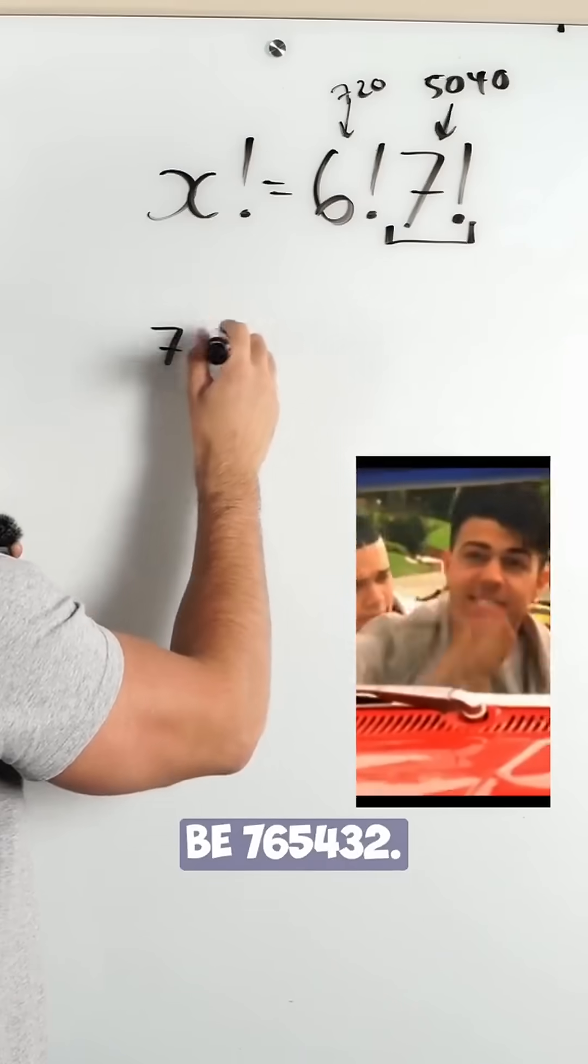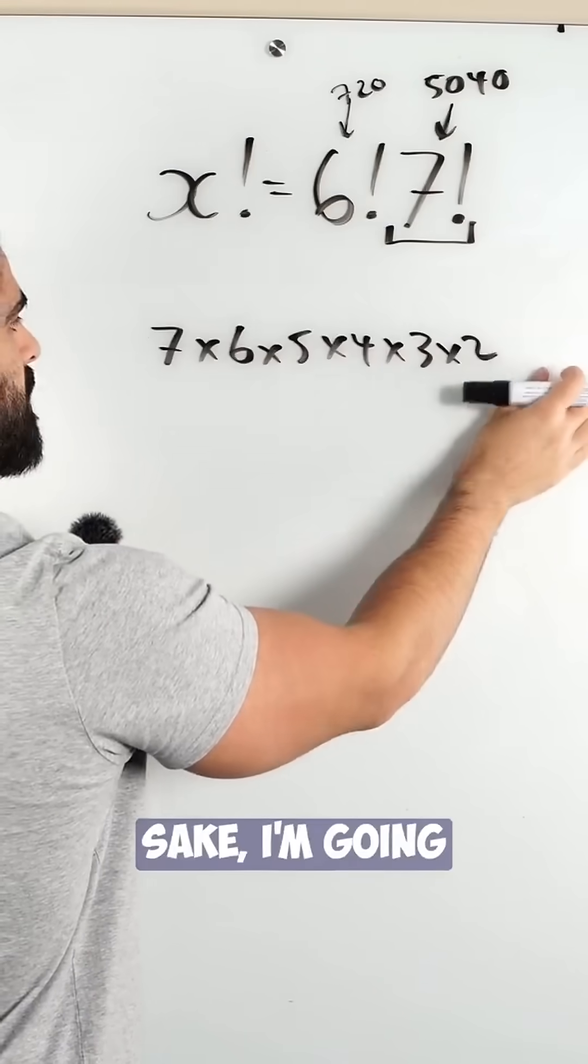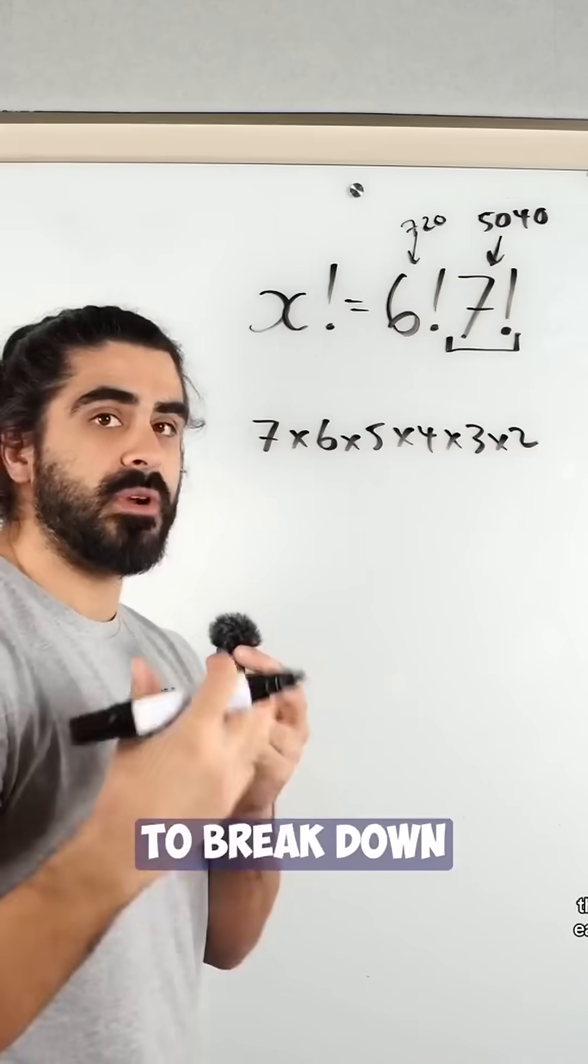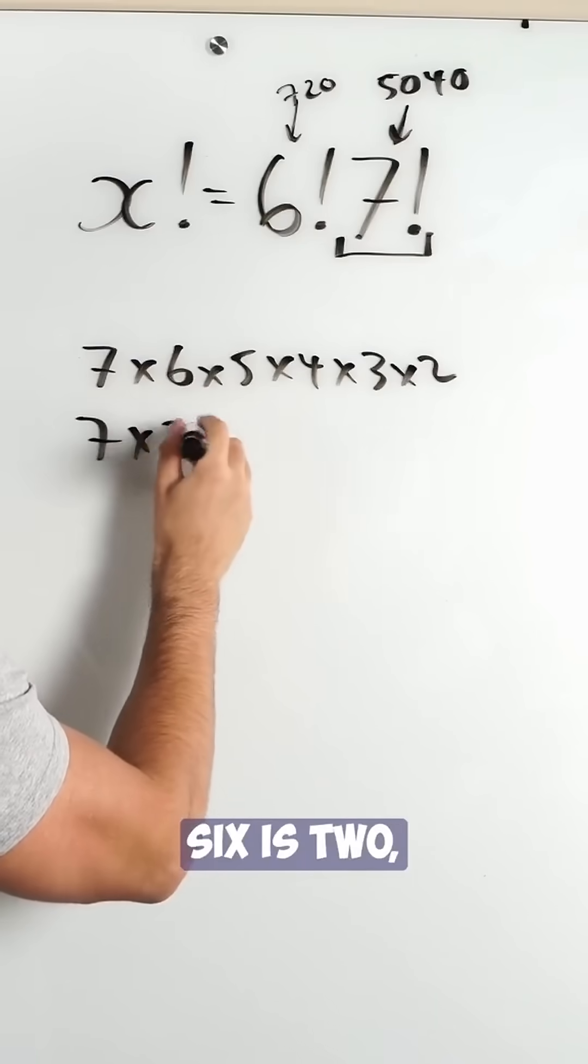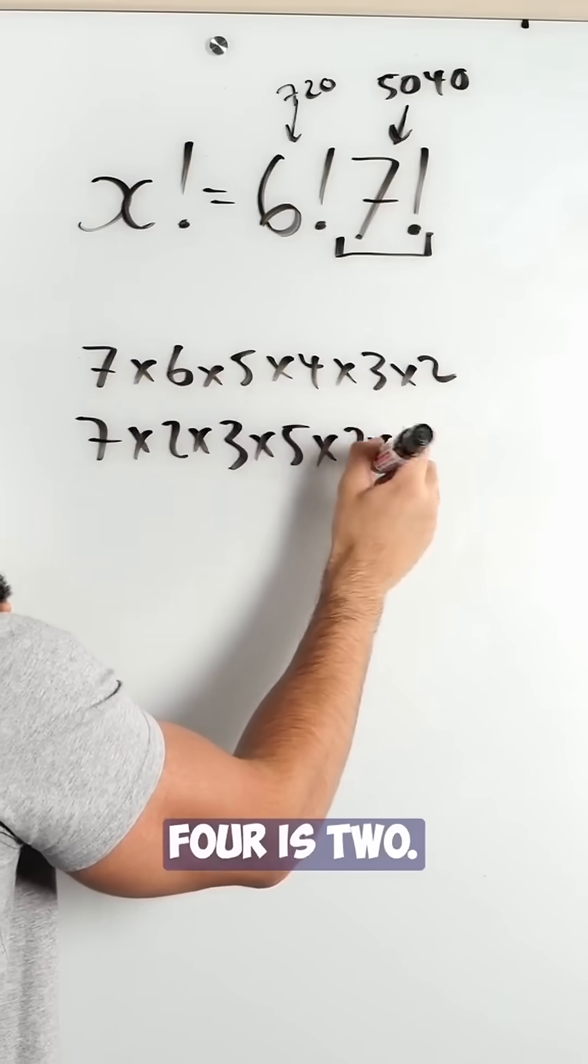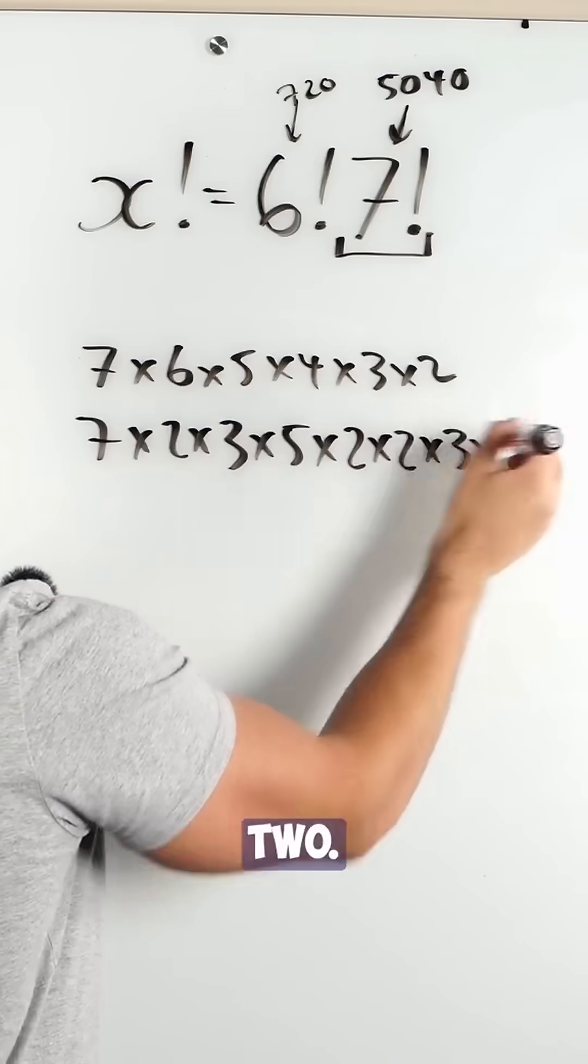7 factorial is 7, 6, 5, 4, 3, 2. For this, I'm going to ignore the 1. Then I'm going to break down each number into their prime factors. 6 is 2 times 3, we have 5, 4 is 2 times 2, 3 times 2.